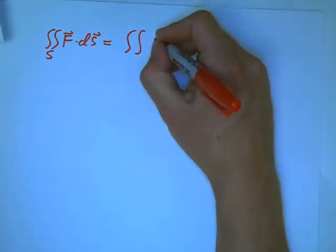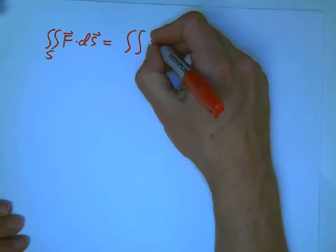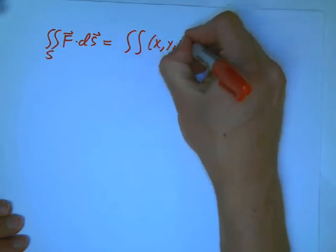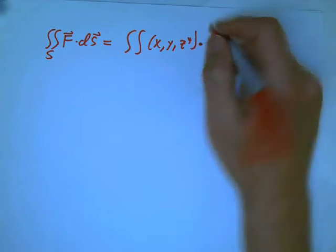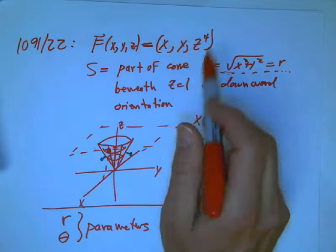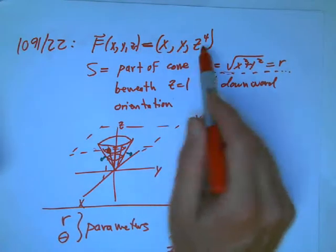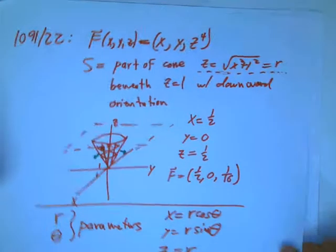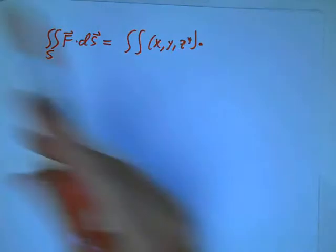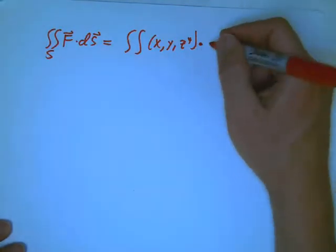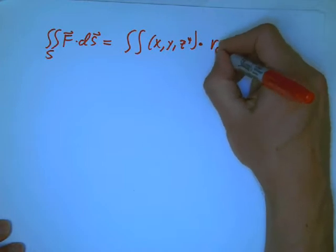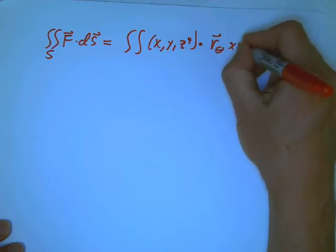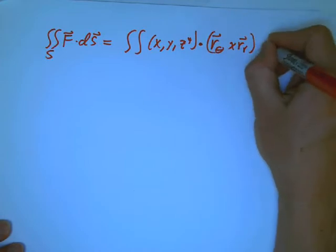The integral, the double integral over s of F dot ds is the integral, and we're going to take that function. Let me just write it, x, y, z to the fourth. This is the only place that, this is the first place that that's come in, where the vector field has come in. When you're looking at this stuff and you're parametrizing the surface, don't get confused with the vector field. That's different information. That's going to come in in its own separate way. That does not have anything to do with parametrizing the surface and the r r, r theta, all that kind of stuff.